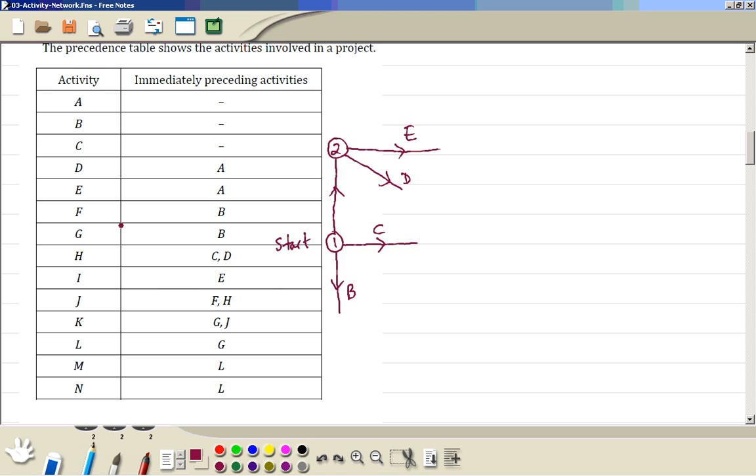Now F and G both depends on B, so the event number 3. This is F and this is G. H depends on C and D so we can join them together. So the event number 4, then H.